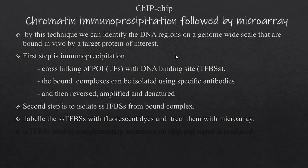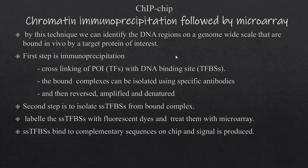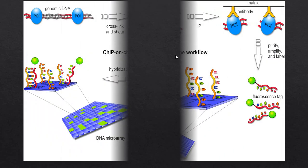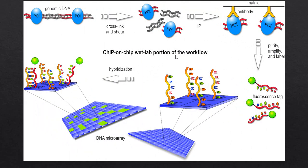After that, we label the single-stranded TFBSs with a fluorescent dye — in this case, a fluorescent antibody — and treat them with the microarray. The microarray already has known sequences embedded on it along with signal-producing elements. The single-stranded TFBSs bind to complementary sequences on the chip and a signal is produced. DNA microarrays are short single-stranded sequences supported on a chip that cover the genomic portion of interest.